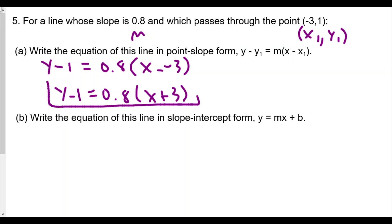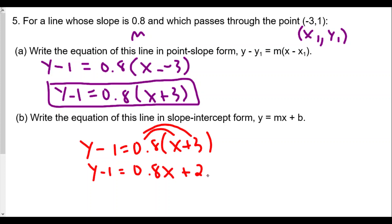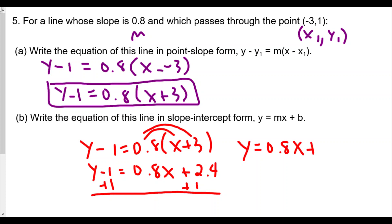Now converting to slope-intercept form by solving for y: distribute 0.8 to get y minus one equals 0.8x plus 2.4. Adding one to both sides gives y equals 0.8x plus 3.4. So in slope-intercept form, the slope is still 0.8 and the y-intercept is 3.4.